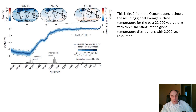First, going back about 18,000 years ago — just about the end of the last ice age — temperatures across the globe were about 8 degrees centigrade cooler than they are today. It took about another few thousand years for the Earth to warm up, and then around 9,000 to 10,000 years ago, the temperature stabilized.